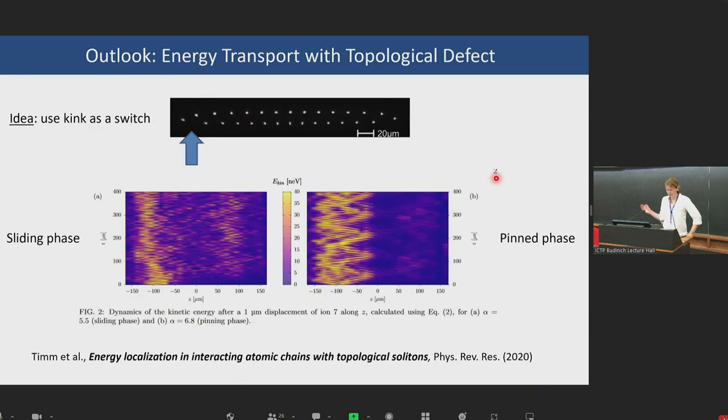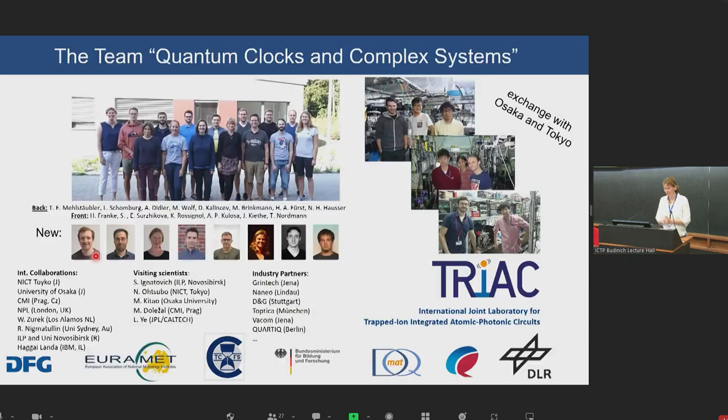In the future we will go towards energy transport through the topological defect. Nice work by Lars Timm. Our idea was to use the kink as a switch. When you impart kinetic energy on one side, it will not arrive on the other side depending whether you're in the sliding phase or in the pinned phase. With our control parameter we can switch that on and off. With this I'm at the end of my talk. Thank you very much for your attention.